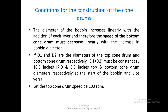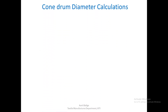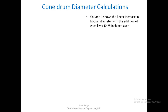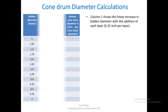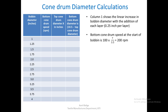Let the chondrom speed be 100 RPM. Column 1 shows the linear increase in bobbin diameter with the addition of each layer, that is 0.25 inches per layer, up to 4 inches. For the bottom chondrom speed at the beginning: if the top chondrom speed is 100 RPM, the belt starts where the top chondrom is 7 inches and bottom chondrom is 3.5 inches in diameter. So the bottom chondrom speed will be 100 × (7/3.5) = 200 RPM.